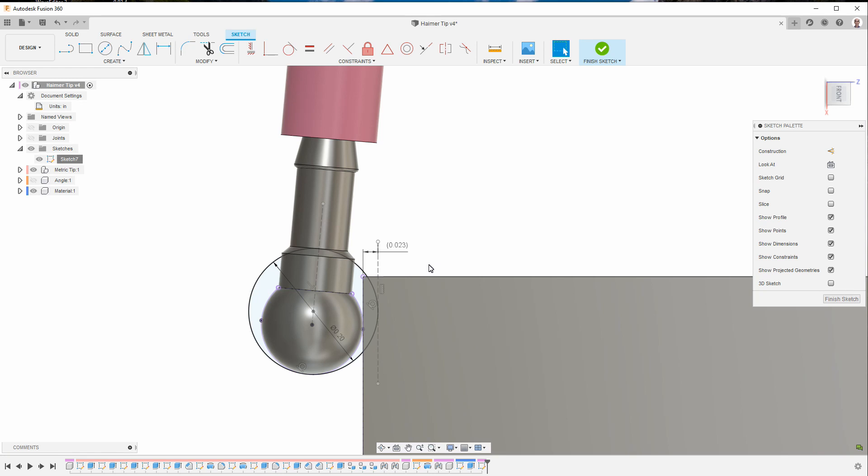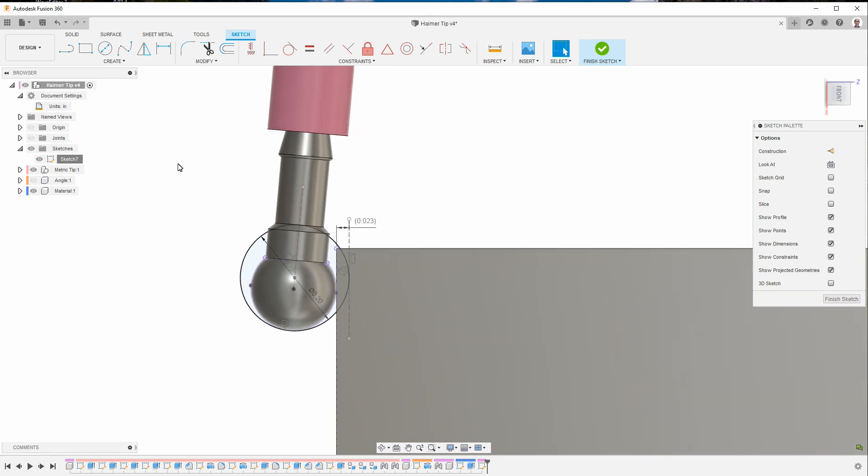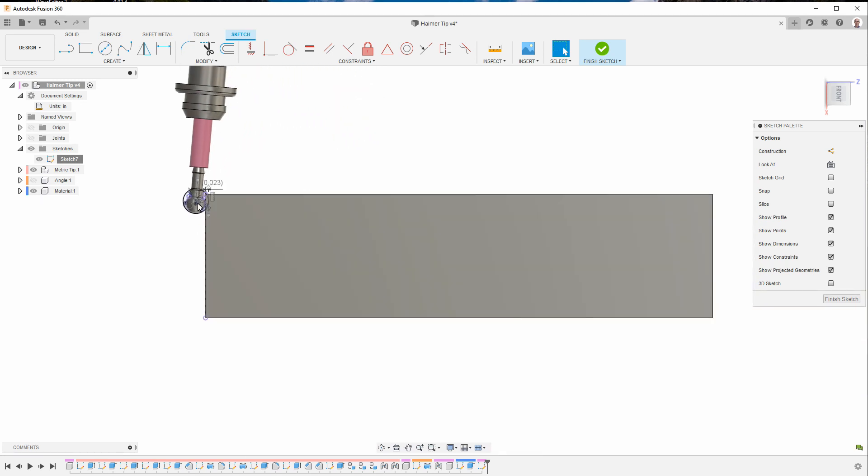So this shows you what happens if you're using the wrong tip. Now you can get around this, of course, if instead of using an edge, you measure it both here and then on the other side, and then take half of that and make this the center, because that will basically cancel out the two differences.